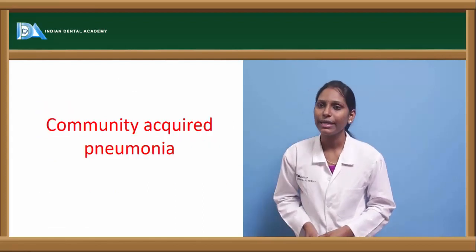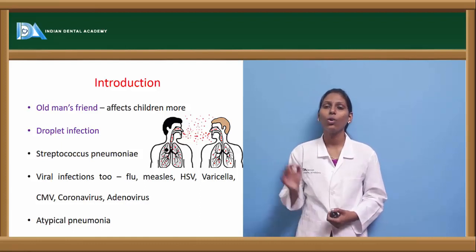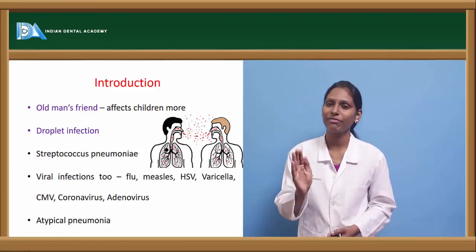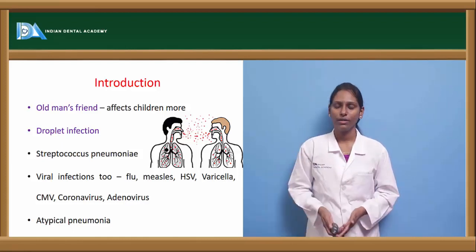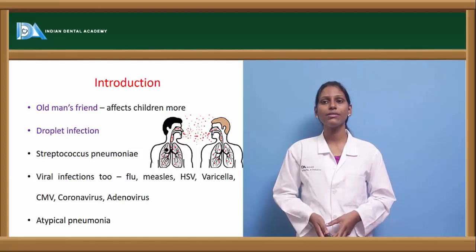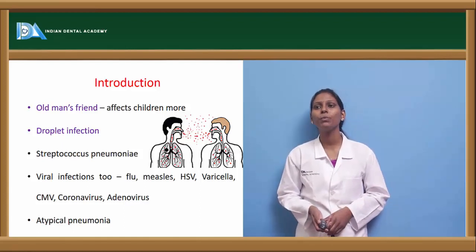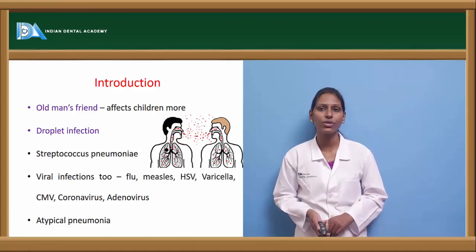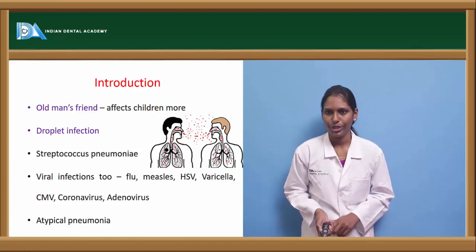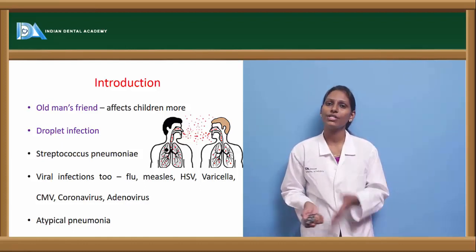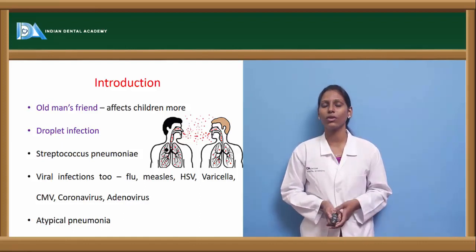Community acquired pneumonia is called the 'old man's friend' as elderly people are commonly involved. It commonly affects children and spreads through droplet infection. The most common causative organism is Streptococcus pneumoniae. Various viral infections such as influenza, measles, HSV, varicella zoster, cytomegalovirus, coronavirus, and adenovirus are also commonly associated. There is also atypical pneumonia where the actual causative organism is not known.